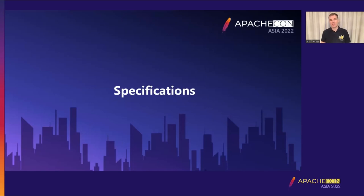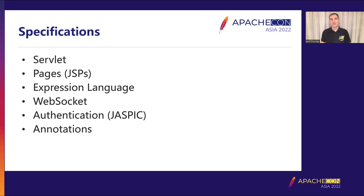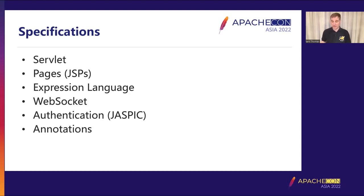Before I discuss the changes, let me talk about the specifications Tomcat implements. Normally we discuss the obvious four: Servlet, Pages (formerly JSP), Expression Language, and WebSocket. The other two are Authentication and Annotations. Tomcat started by implementing just Servlet and JSP. When Expression Language separated from JSP, Tomcat added an EL implementation. WebSocket and Authentication came around the same time. Annotations was picked up because a number of other specifications depend on it, and it was easier to include an implementation.